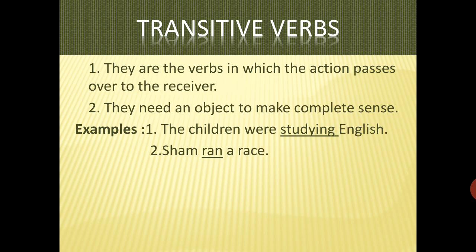Now, talking about transitive verbs. Transitive verbs have objects because the action passes over to the receiver, and we need an object for it to make complete sense. For example, 'The children were studying English' — now you know they are studying English, so the object is known. Hence 'studying' is a transitive verb. 'Sham ran a race' — here you know he ran a race, so 'ran' is a transitive verb because you know the object.